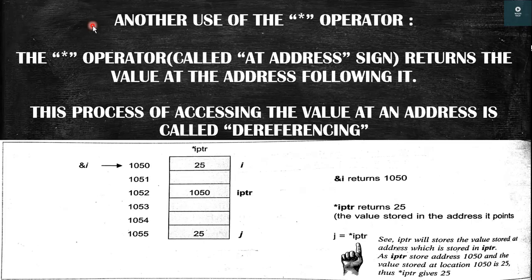Now we will see another use of the star operator. The first use is to create a pointer, and the second use is that the star operator — also called the at-address sign — returns the value at the address following it. This process of accessing the value at an address using the star operator is called dereferencing.